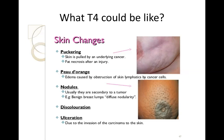Puckering occurs when the skin is pulled by an underlying cancer. Peau d'orange occurs when there is obstruction of the skin lymphatics by invasion of cancer cells, causing edema, making the breast skin have a characteristic appearance like an orange peel — that's why it's called peau d'orange. There could also be nodule formation on the skin, or it can ulcerate through the skin.